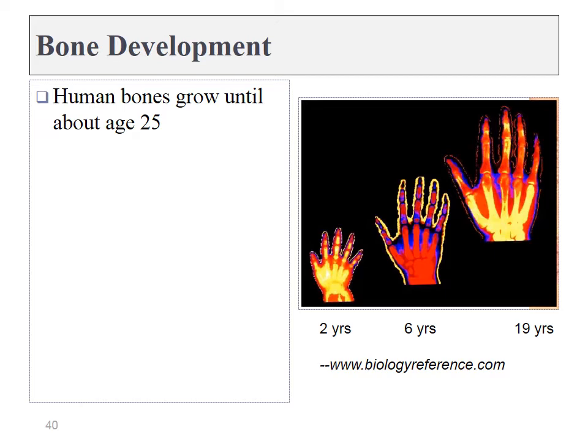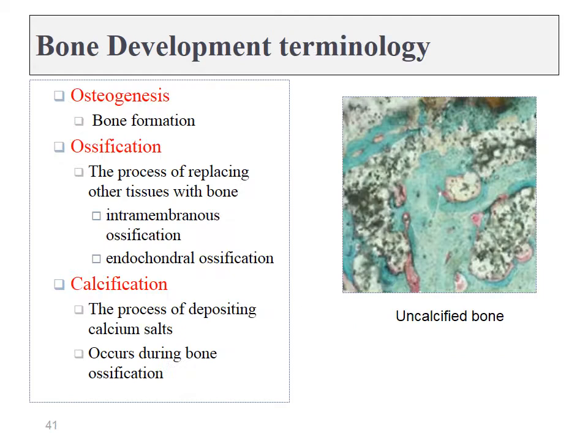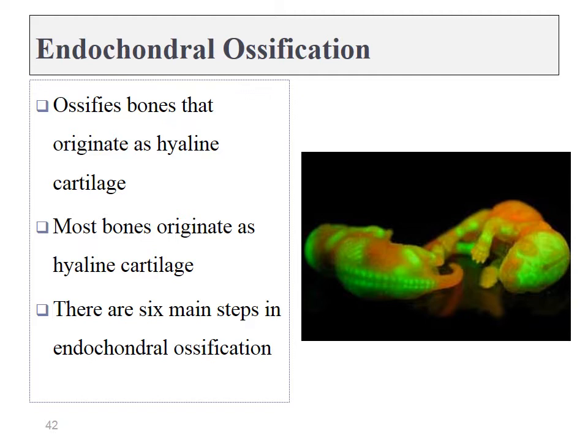Next up, we need to talk about how bones develop. Bones will continue to grow until we're in our twenties or so. Let's start with a little terminology. Osteogenesis is the word for the formation of bone tissue, whereas ossification is replacing one tissue with bone tissue. Calcification is the deposition of calcium phosphate crystals to create mature bone tissue.